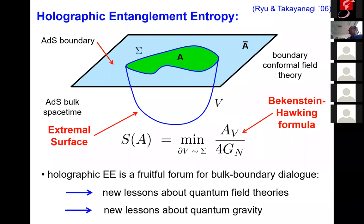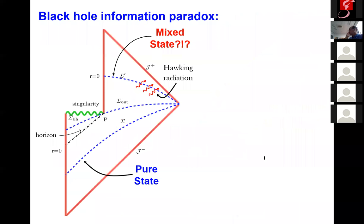I'll be talking about holographic entanglement entropy, which has been a very fruitful tool. It provided a forum where we really had an interesting dialogue between the bulk and the boundary in holography. We've learned new things about quantum field theory, and at the same time we're learning new things about quantum gravity. This is a setting where we're getting insights into the black hole information paradox.